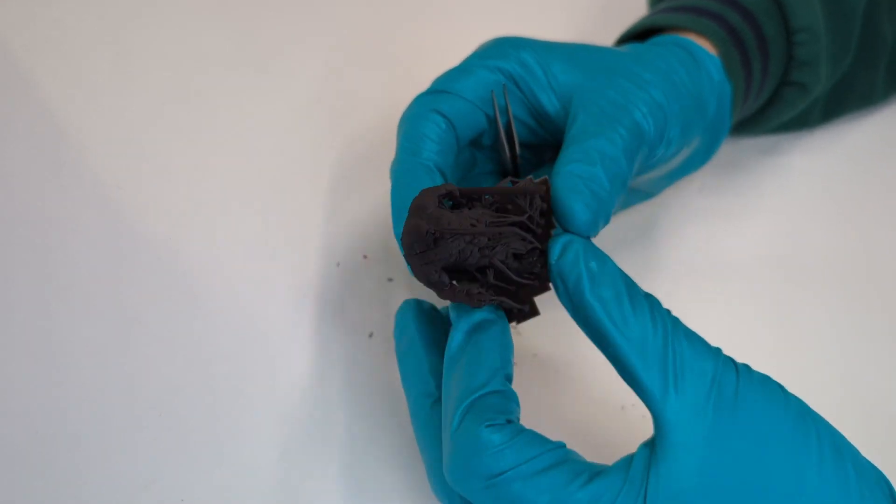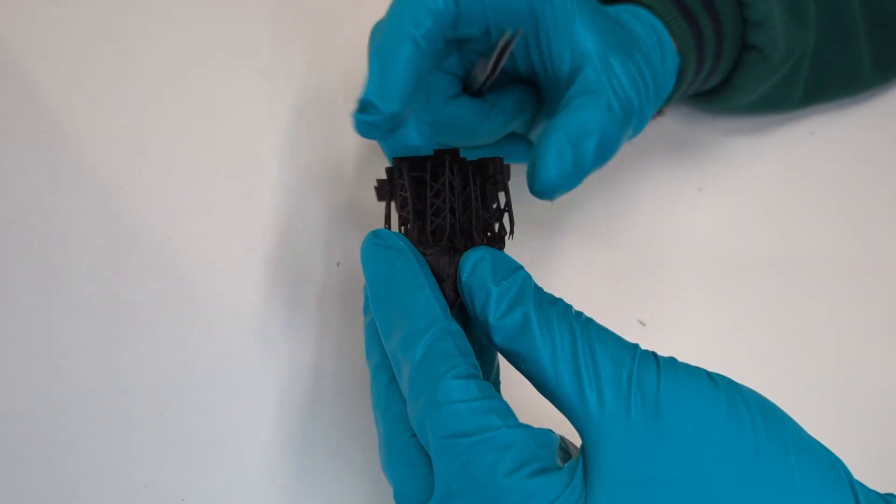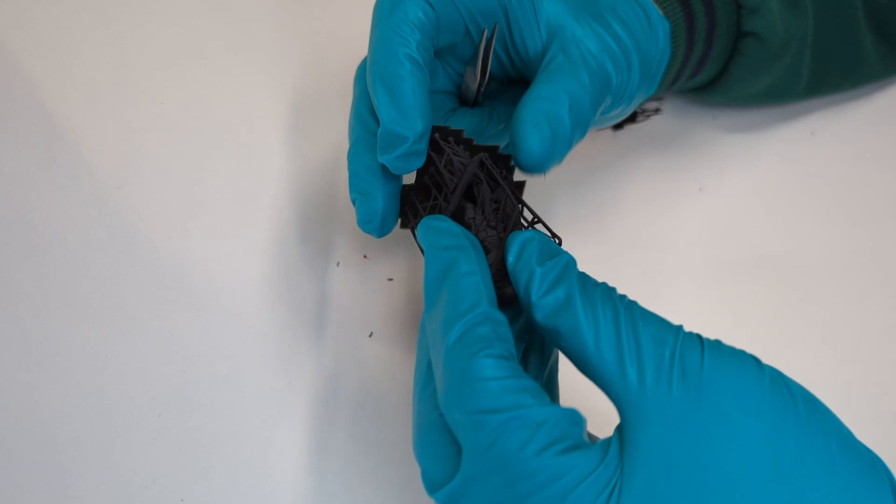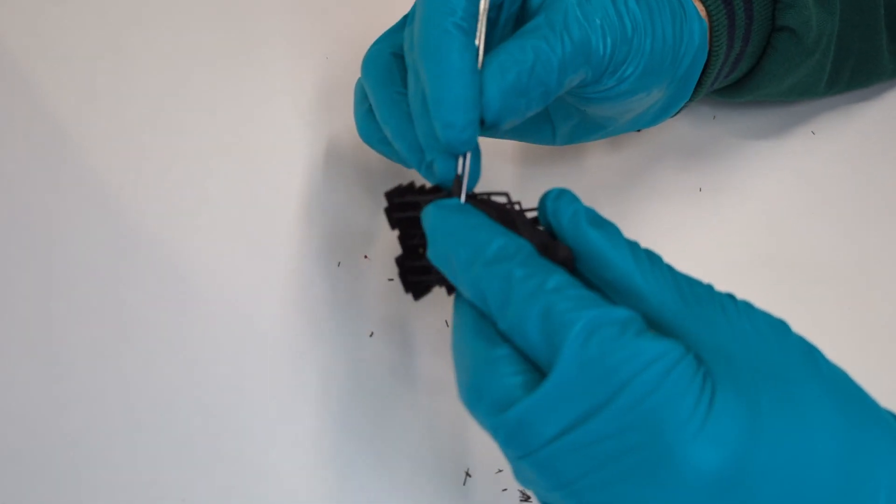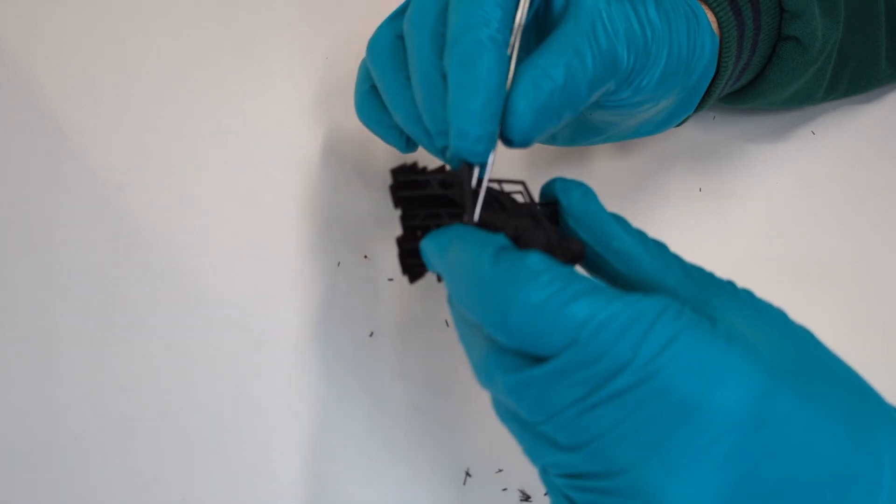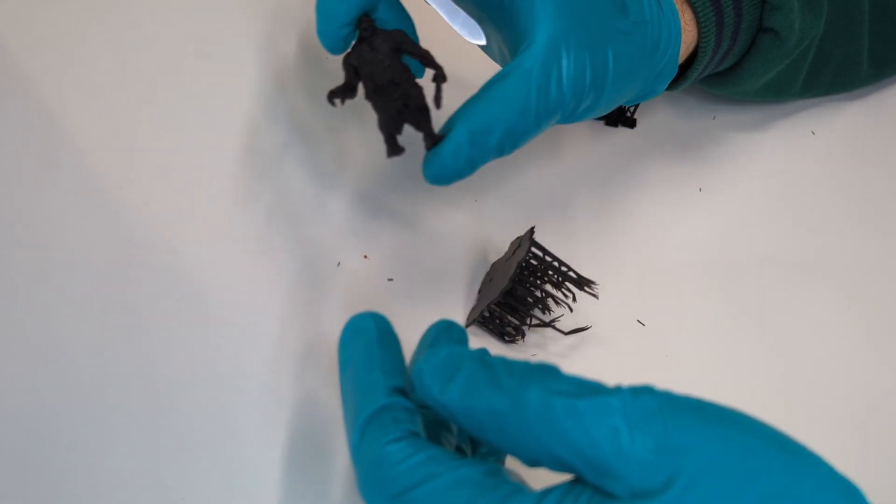Supports are easily removable and don't leave too many scar marks. As supports are more flexible, they may not snap or detach from the model as a standard resin, so I like to use a plier on fragile areas such as hands and weapons on such minis.